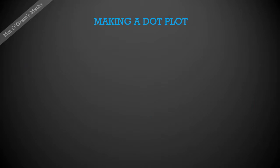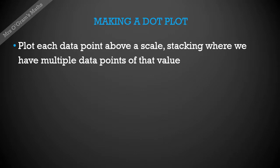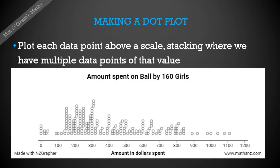You could also be asked to make a dot plot from the values you've been given. Each data point is plotted above a scale, stacking them where you've got more than one at a point. So if three girls spent $200, you'd see three dots above the $200 point. I've used a graphing program to do this, and you can see there's a lot more data — 160 data points — plotted as a dot plot. The more data points you have, the more things you can conclude about it.